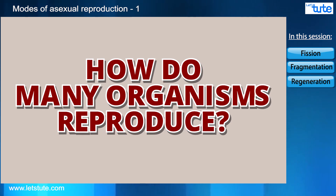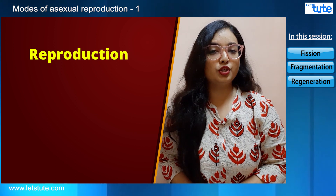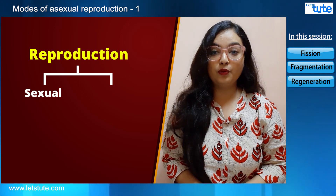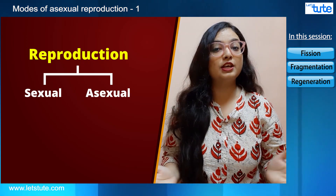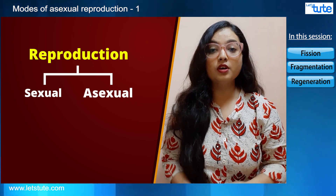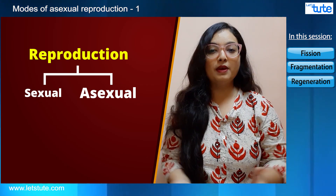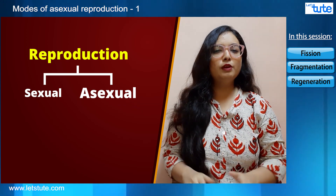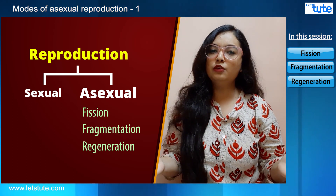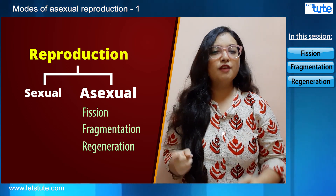Today we are going to learn how do many organisms reproduce. Reproduction is broadly divided into two categories: the first being the sexual method of reproduction, and the second being the asexual method of reproduction. Today we are going to first discuss the asexual mode of reproduction. There are many methods of asexual reproduction used by unicellular as well as multicellular organisms.